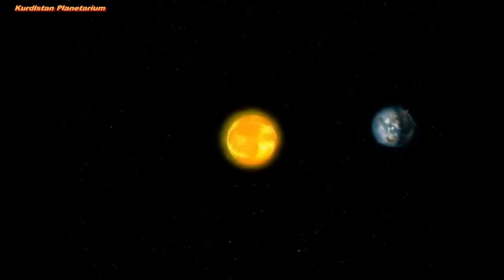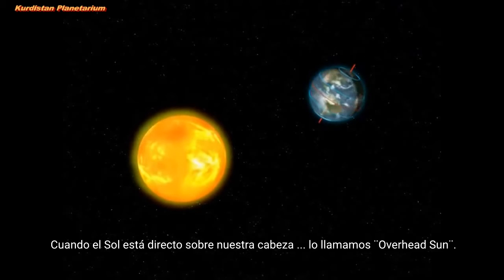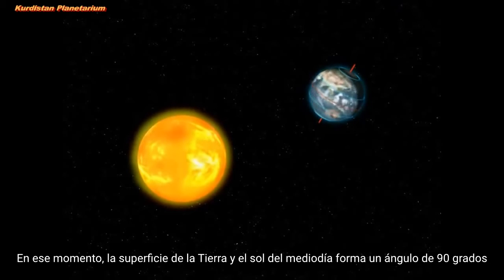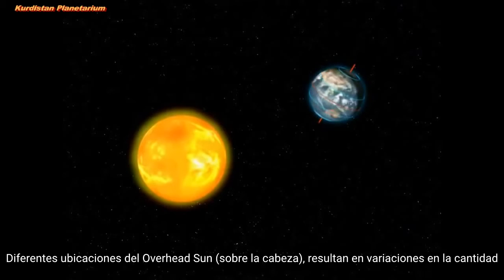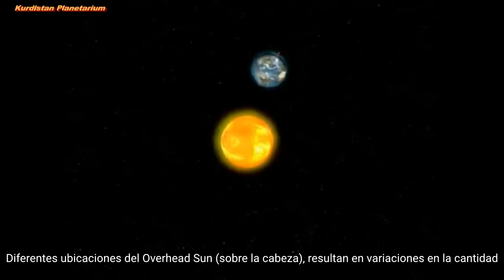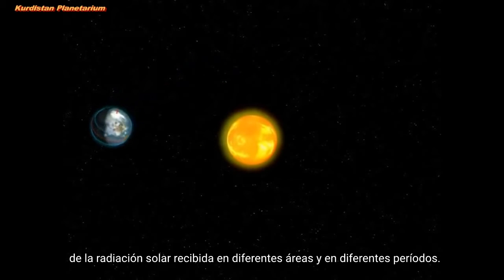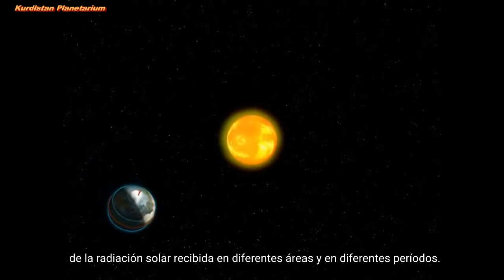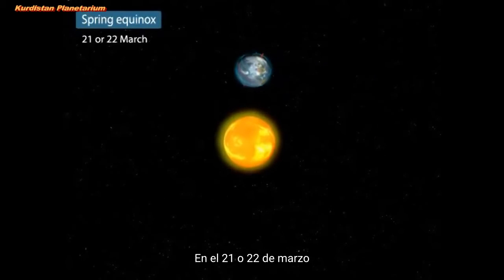When the Sun is directly overhead, we call this the overhead Sun. At this time, the Earth's surface and the midday Sun form a 90 degree angle. Different locations of the overhead Sun result in variations in the amount of solar radiation received in different areas and at different periods.